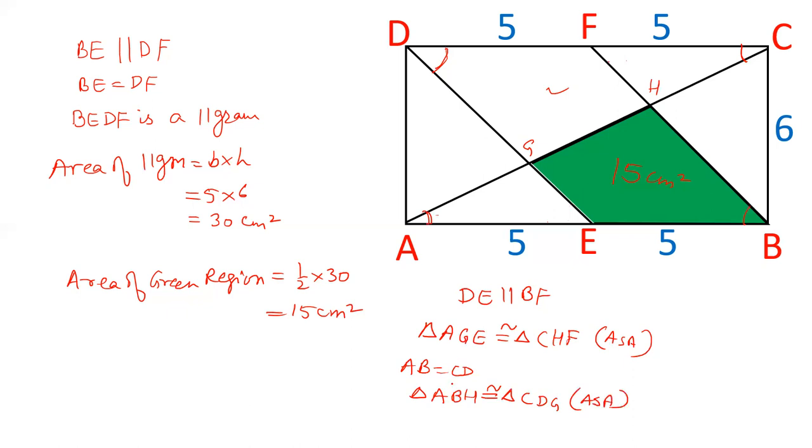And if we subtract this two, we will get the value part, this BEGH. So, their areas are equal. Subtract this: triangle ABH minus triangle AGE is equal to triangle CDG minus triangle CHF. Subtracting these two will give BEGH, that is the green part and DFHG. So, area of these two parts are equal.